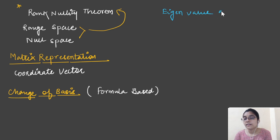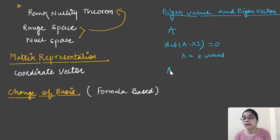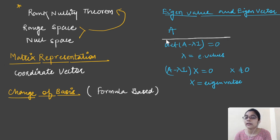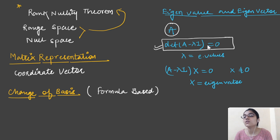After change of basis, we will move toward eigen values and eigen vectors. Most of you currently only know that for a matrix A, you set determinant of (A minus lambda I) equal to zero to get lambda as the eigen value, and then solve (A minus lambda I)x = 0 for a non-zero vector x to get the eigen vector. But many of you have never understood why we do this — why we set the determinant of (A minus lambda I) to zero. Once I teach this course, I will explain clearly where this comes from. We should understand the logic behind every step — not just memorize it.